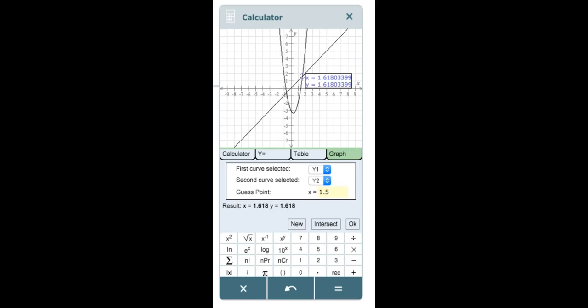This tells us that these two graphs intersect at the point (1.618, 1.618). We can repeat these same steps entering a different guess point to evaluate for the leftmost intersection point.